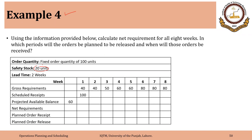We didn't consider safety stock in previous examples. The company has to maintain a safety stock of 20 units and the order quantity is a fixed order quantity of 100 units or any multiples of 100, and the lead time is two weeks.